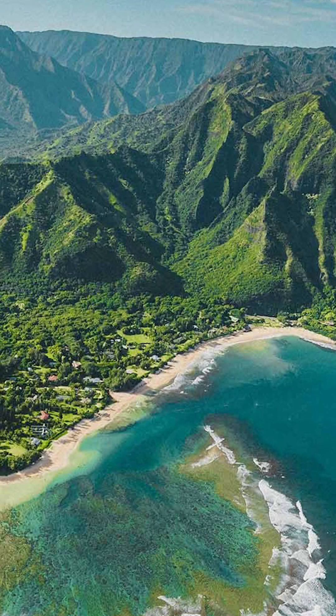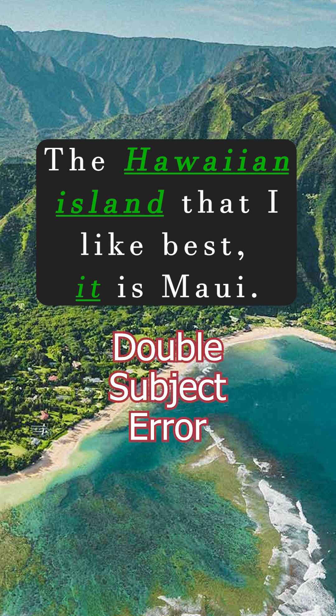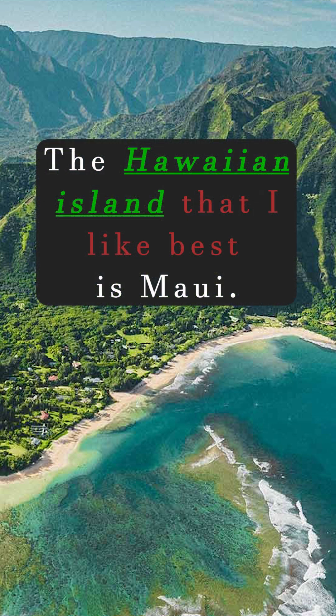It's still a double subject error. For example: 'The Hawaiian island that I like best, it's Maui.' The Hawaiian island is the subject, and 'it' in 'it's Maui' is also a subject. They are separated by the words 'that I like best,' but there are still two subjects — the initial one, Hawaiian island, and the double subject error, 'it.' To fix that, take out the personal subject pronoun: The Hawaiian island that I like best is Maui.